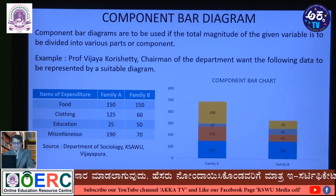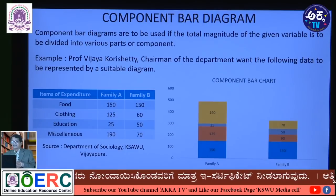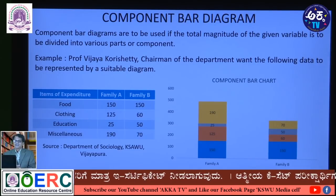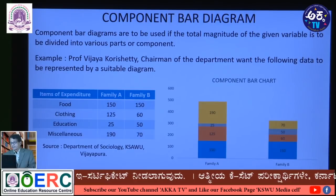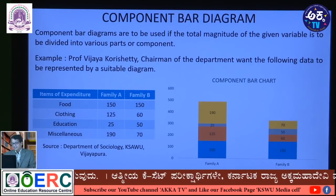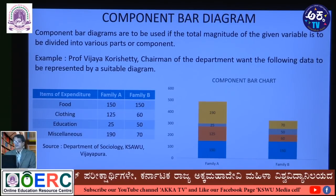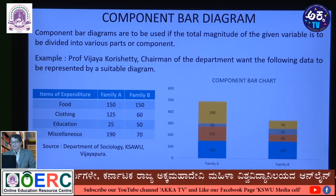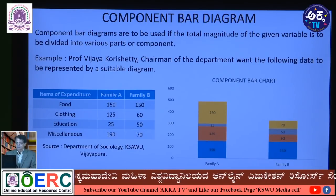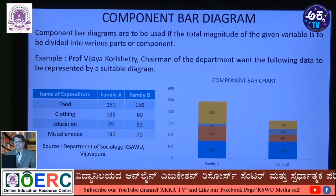Now let us look at component bar chart. Component bar diagrams are used when the total magnitude of a given variable is to be divided into various parts or components for comparative studies. Whenever there is a situation of comparing between the group and within the group, we use component bar diagrams. The advantage is that comparison can be done both between groups and within the group.